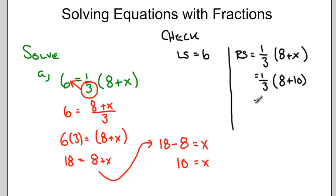I get 1 3 multiplied by 18 or 18 over 3 which I can reduce to 6. So my left side and my right side are equal which means x equals 10 is the correct solution.